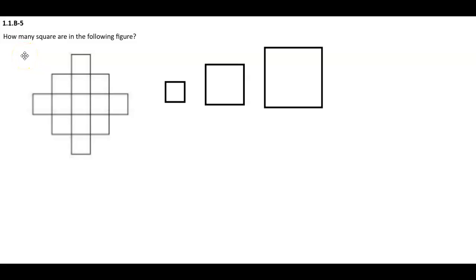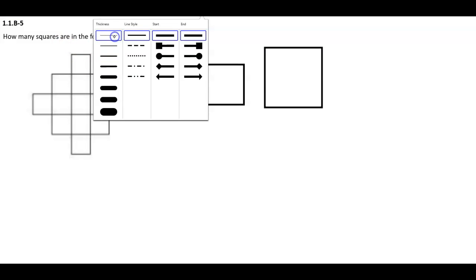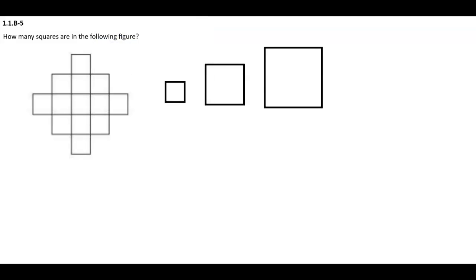How many squares are in the following figure? Okay, so what we're looking at here is three different sizes. This is one square unit. This has four. So we're going to say that that has nine.